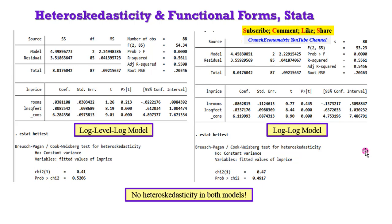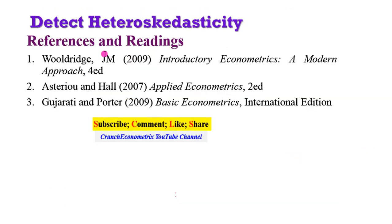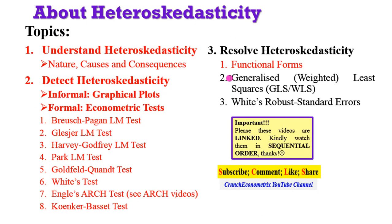So this is one of the ways by which the problem of heteroskedasticity can be corrected. For more information about functional forms, there are chapters in each of these textbooks, so please make sure you go through them for more understanding of how you can transform your model into functional forms. The next video will be on how you can resolve the problem of heteroskedasticity using generalized or what is known as weighted least squares.